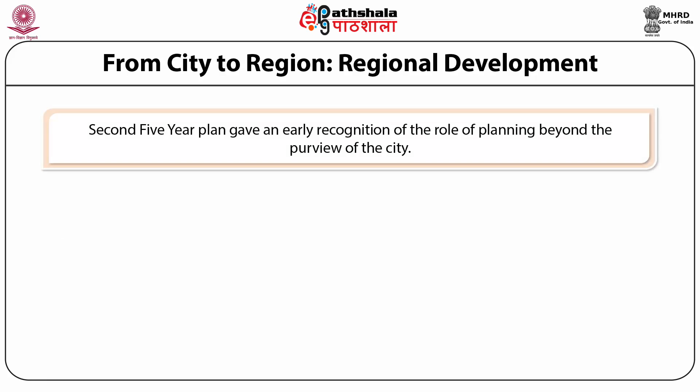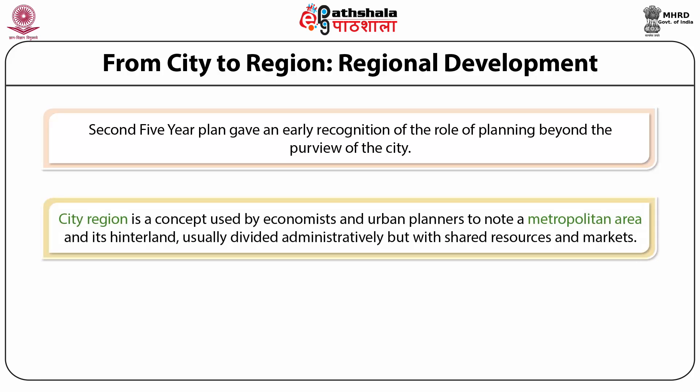The second five-year plan gave early recognition of the role of planning beyond the purview of the city. As slums were proliferating, the concept of the regional plan was introduced. However, the major impetus came during the third five-year plan period of 1961–66, which recognized the need for balanced spatial and demographic development. The idea of the city-region — used by economists and urban planners to denote a metropolitan area and its hinterland with shared resources and markets — became central to regional planning thinking.